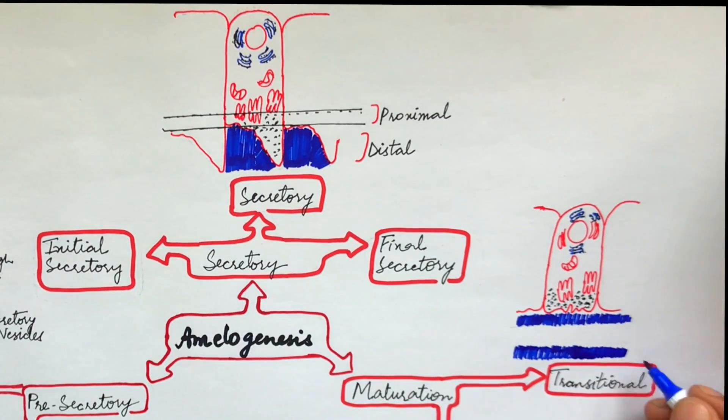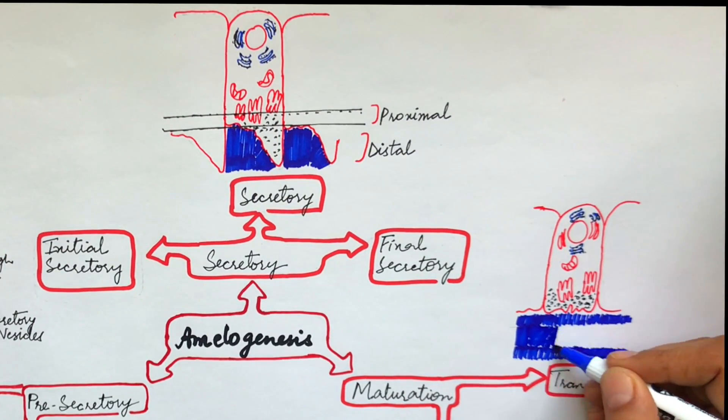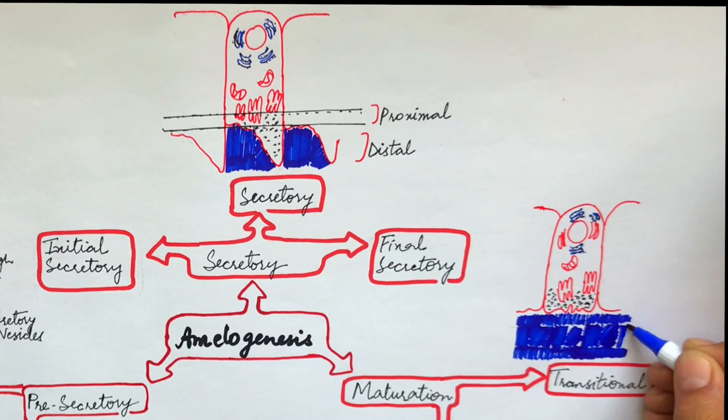At the end, the enamel will be composed of a rod and inter-rod containing layer sandwiched between thin rodless initial and final layers.